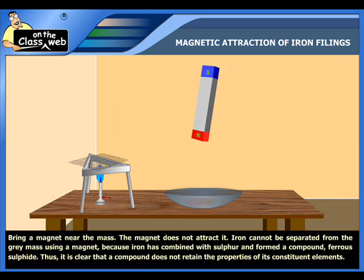Here, iron cannot be separated from the gray mass using a magnet because iron has combined with sulfur and formed a compound — ferrous sulfide. Thus, it is clear that a compound does not retain the properties of its constituent elements.